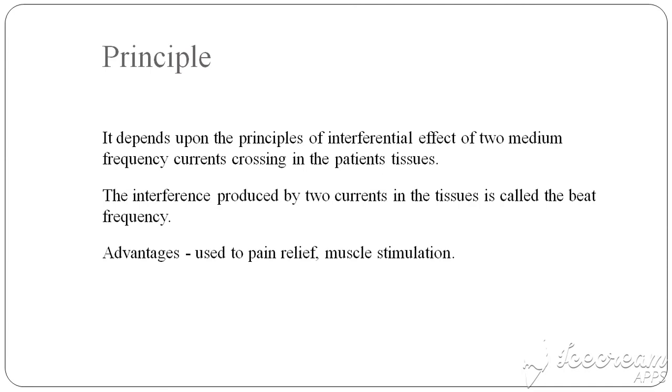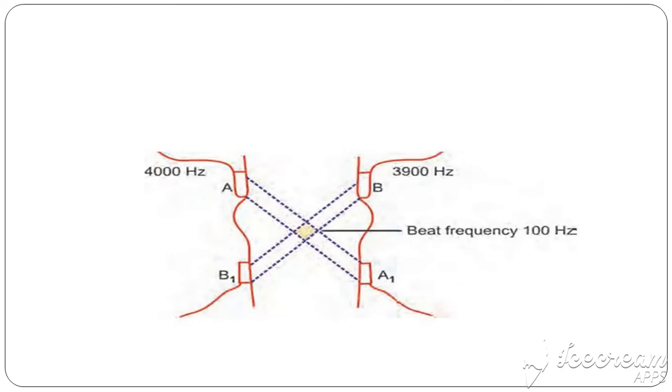Advantages: It is used to relieve pain and muscle stimulation. So in this diagram, you can see there is A and A1. These are the two electrodes from one single channel, and B and B1, these are the other two electrodes from the other channel.